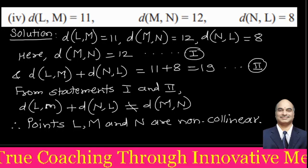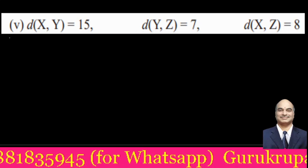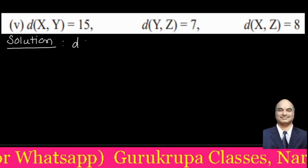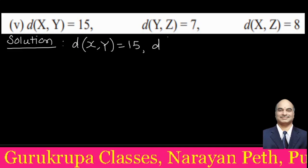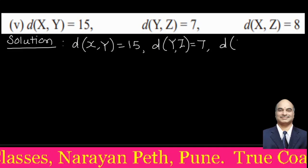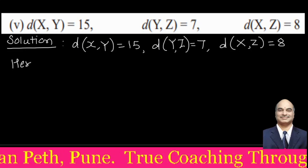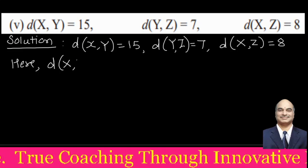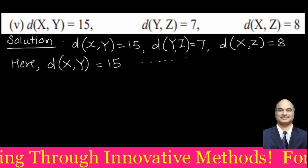In the fifth problem, the given distances are: distance XY is 15, distance YZ is 7, and distance XZ is 8. The greatest distance is XY which equals 15, and that is statement 1.